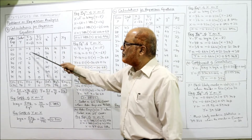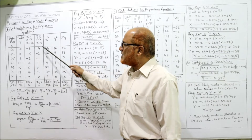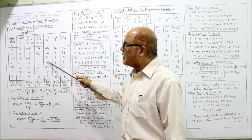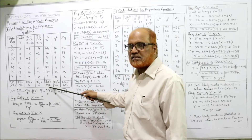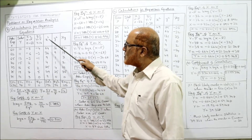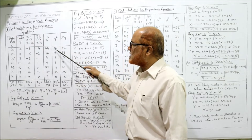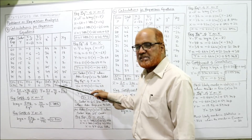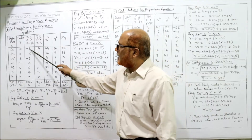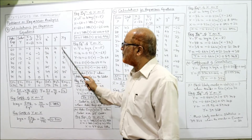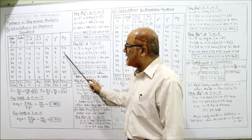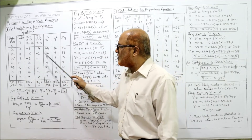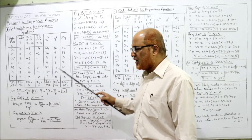Now calculate x squared: 8 squared is 64, 6 squared is 36, 3 squared is 9, 2 squared is 4. The total summation x squared is 196. For y squared: 4 squared is 16, 3 squared is 9, 1 squared is 1; total summation y squared is 56. For x times y: 8 times 4 is 32, 6 times 3 is 18, 3 times 1 is 3; noting that minus times minus becomes plus. The total summation xy is 100.